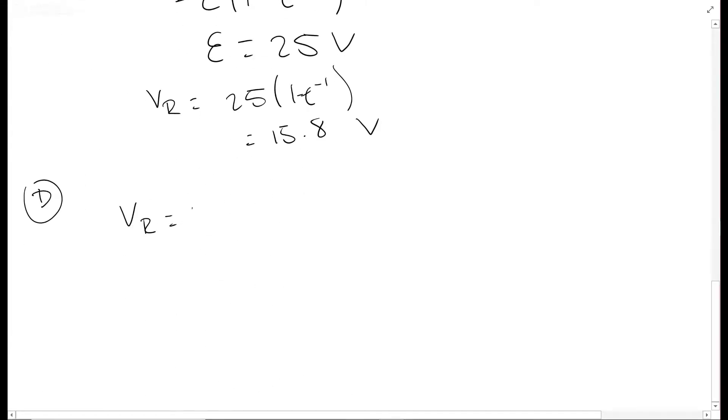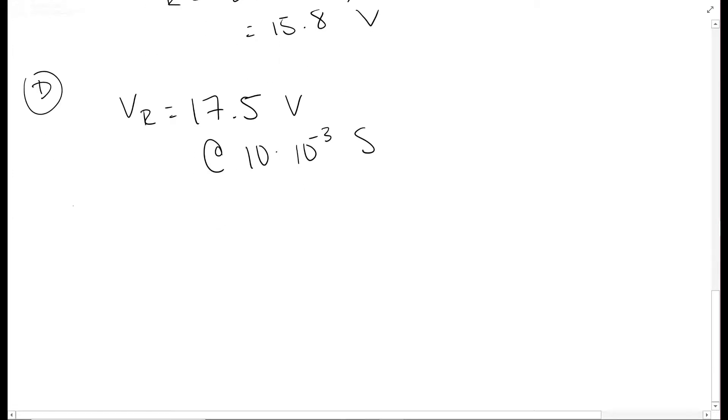We're going to have our Vr of 17.5 volts at 10 milliseconds. So 10 times 10 to the negative third, and we have our same equation.